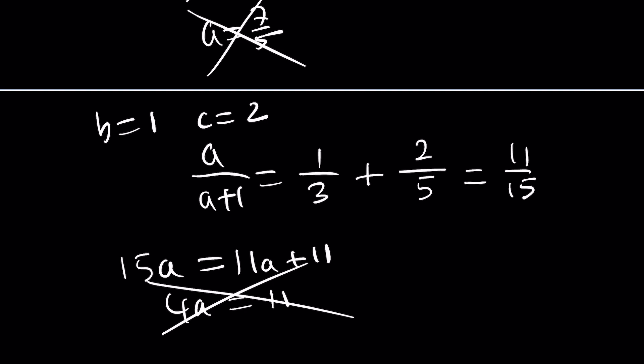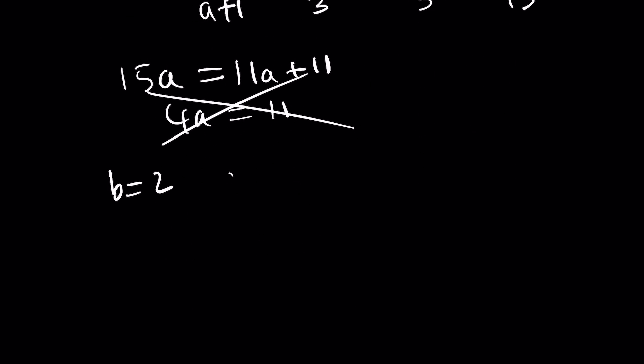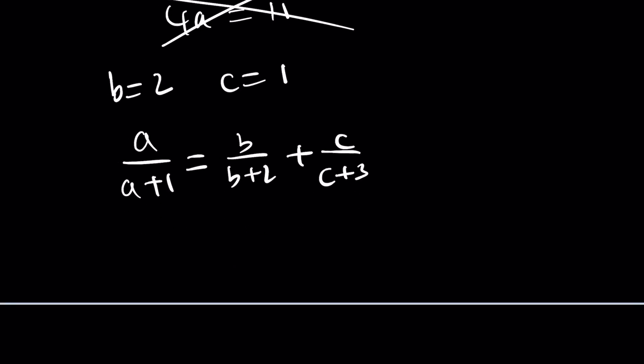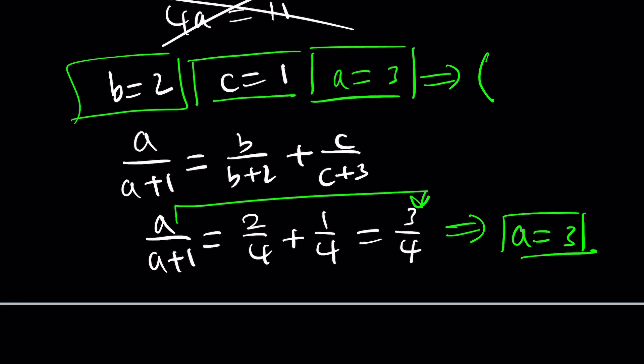But you kind of need to go through all the cases. And maybe one of these is going to work. Let me try to find something that would probably work. I think maybe when b is equal to two and c is equal to one. Let's check it out. So a over a plus one is b over b plus two plus c over c plus three. Remember the original problem? So a over a plus one from here is going to be two over four plus one over four. And yay, success! If that's the case, this means a is equal to three. You can still check with cross multiplication, but that's not necessary. So a equals three. If b is equal to two and c is equal to one, which means we get an ordered triple three, comma two, comma one. We already knew the b and c values, but by finding a as well, we get the solution triple.